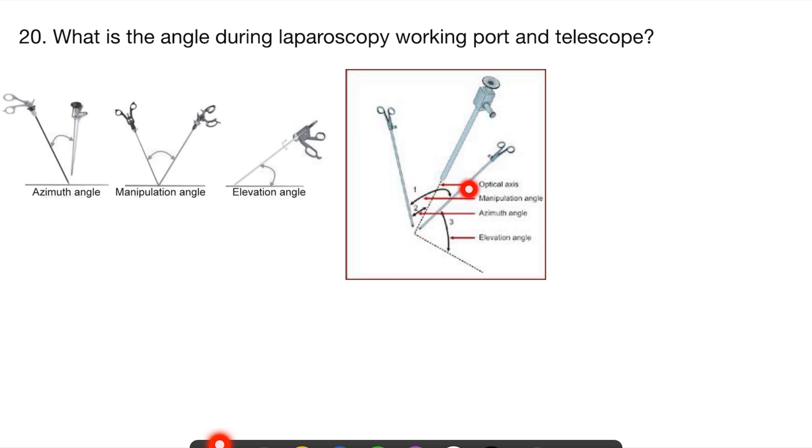Manipulation angle is something which is present between two working ports. Elevation angle is something which is present along the target surface that we are working on and the working port. So surface versus working port is elevation angle, telescope and working port is azimuth angle, and two working ports is manipulation angle.